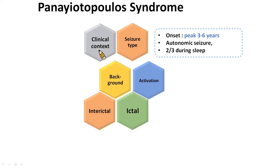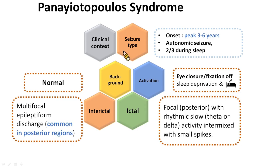To summarize Panayiotopoulos syndrome: this syndrome is characterized by onset in early childhood with focal autonomic seizures that are often prolonged and most commonly occur during sleep. Seizures are self-limiting with remission typically within a few years from onset. The background is normal but multifocal high-voltage spikes or sharp and slow waves are seen in the majority of patients, often in different focal areas on sequential EEGs. All focal brain regions may be affected, but abnormality in the posterior region is more common. Eye closure, which eliminates central vision and fixation sensitivity, may activate occipital spikes.